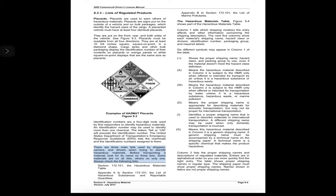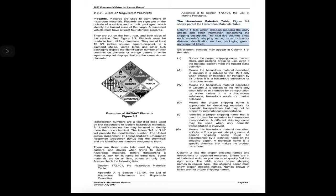Before transporting a material, look for its name on three lists. Always check the following: Section 172.101, the Hazardous Materials Table; Appendix A to Section 172.101, the List of Hazardous Substances and Reportable Quantities; and Appendix B to Section 172.101, the List of Marine Pollutants.